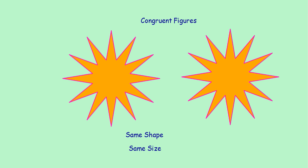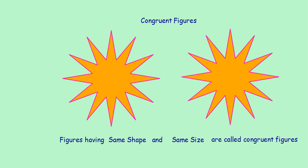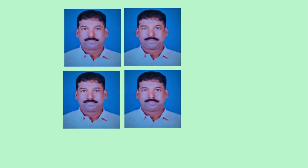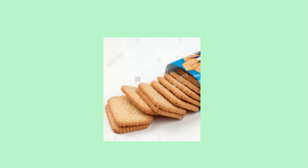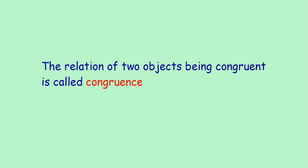Congruent figures can be defined as: figures having the same shape and same size are called congruent figures. You can find different objects in your daily life which are congruent. For example, stamps — if you keep one stamp upon another, it will cover exactly. Similarly, you can find passport size photos, biscuits in a package, etc. The relation of two objects being congruent is called congruence.